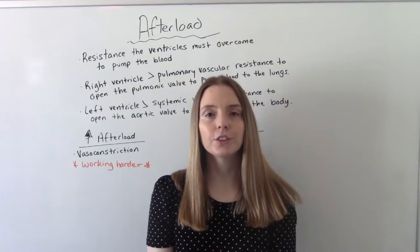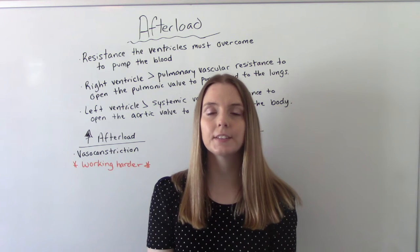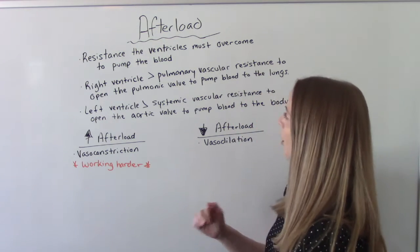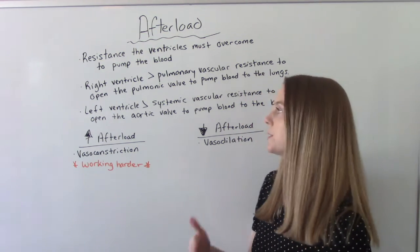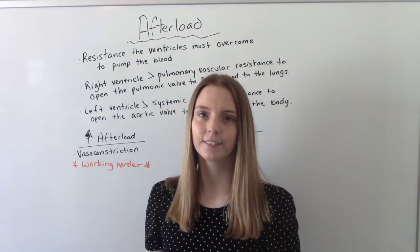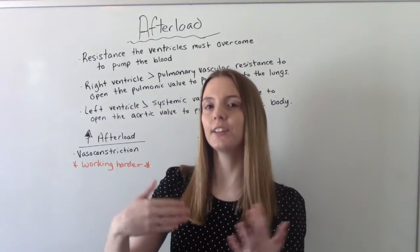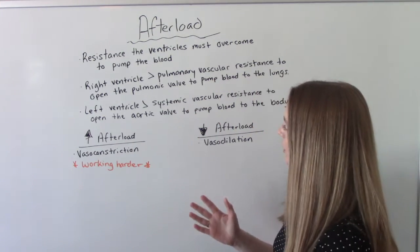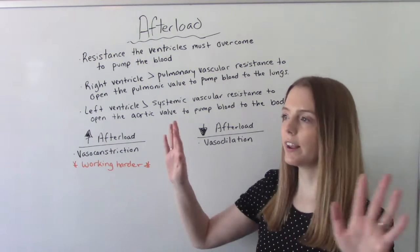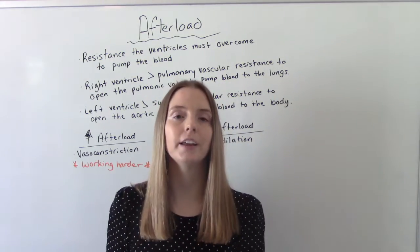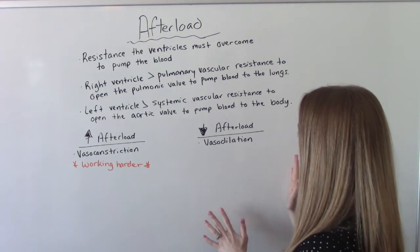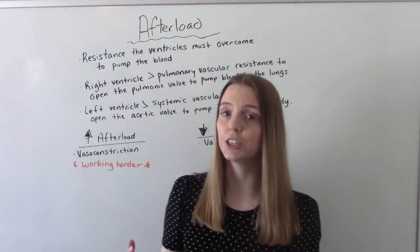Now let's talk about afterload. Afterload is the amount of resistance the ventricles need to overcome to pump the blood. The right ventricle needs to overcome pulmonary vascular resistance to cause the pulmonic valve to open so that blood can go to the lungs and become oxygenated. After it leaves the lungs it goes to the left ventricle, which needs to overcome systemic vascular resistance to open the aortic valve so it can distribute that oxygenated blood to the rest of the body.